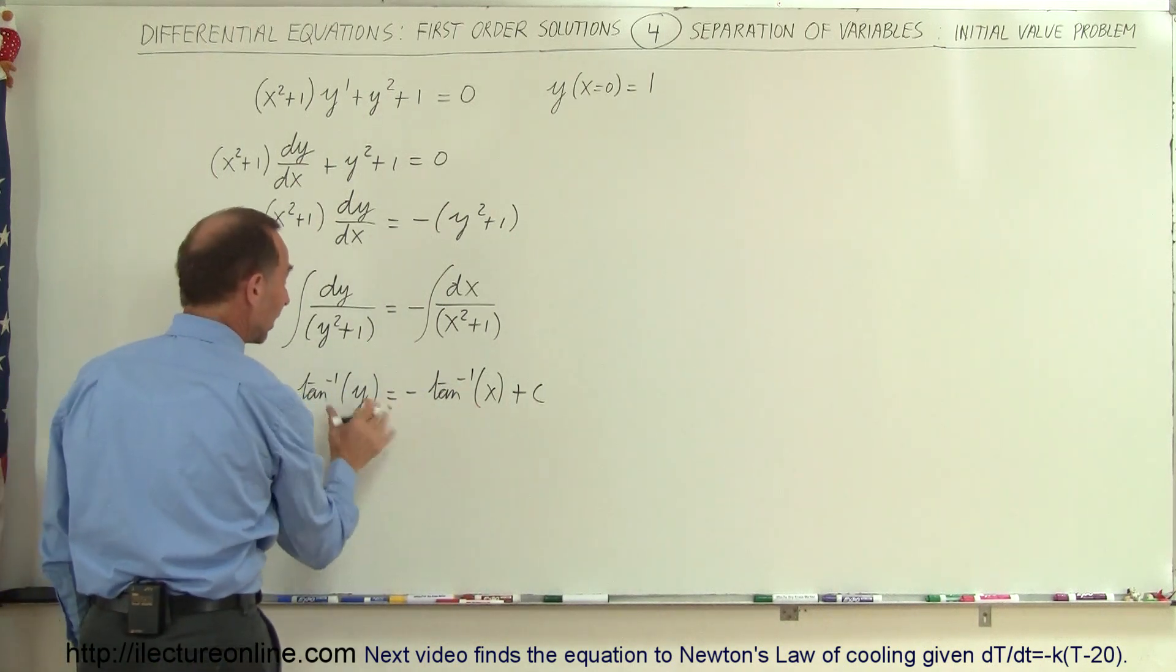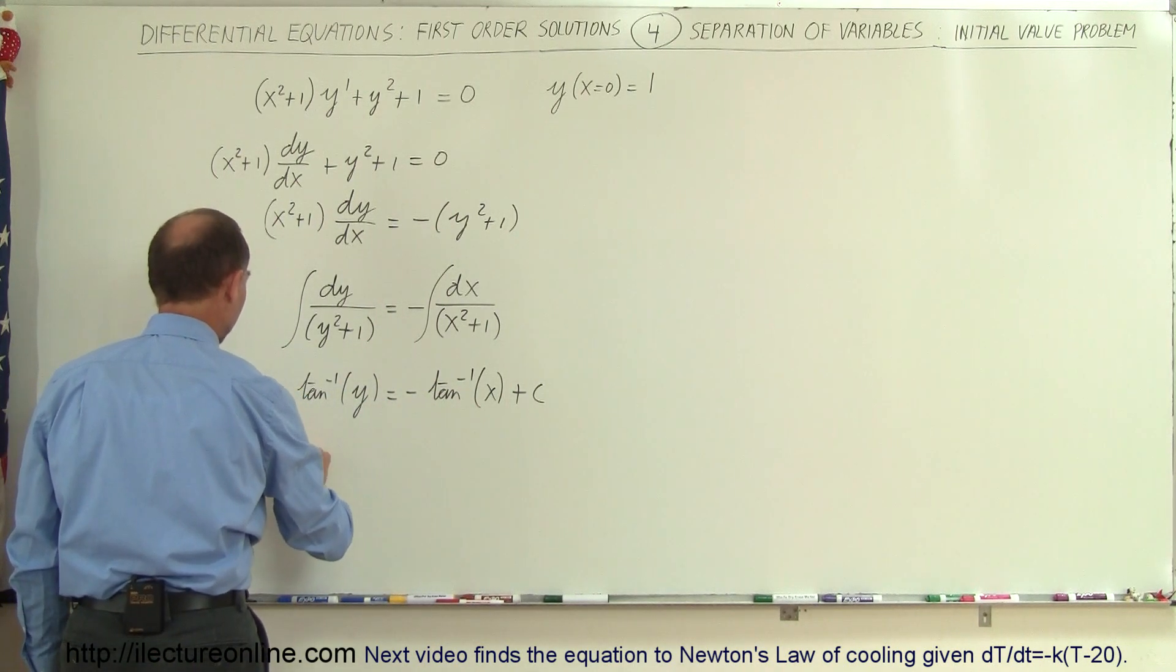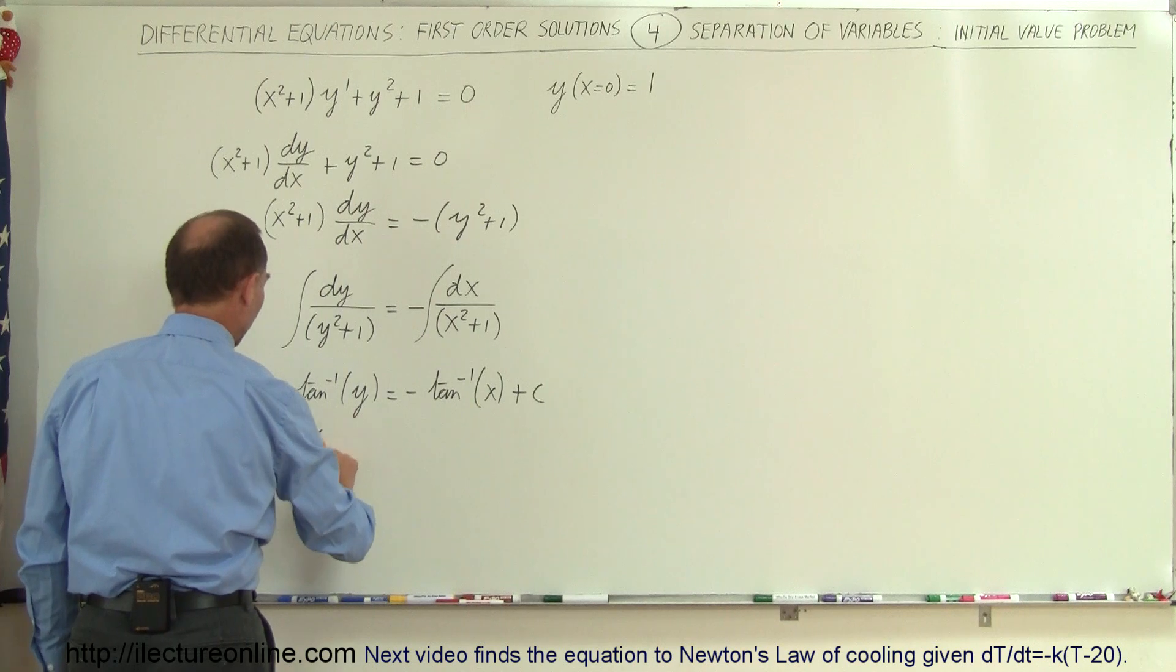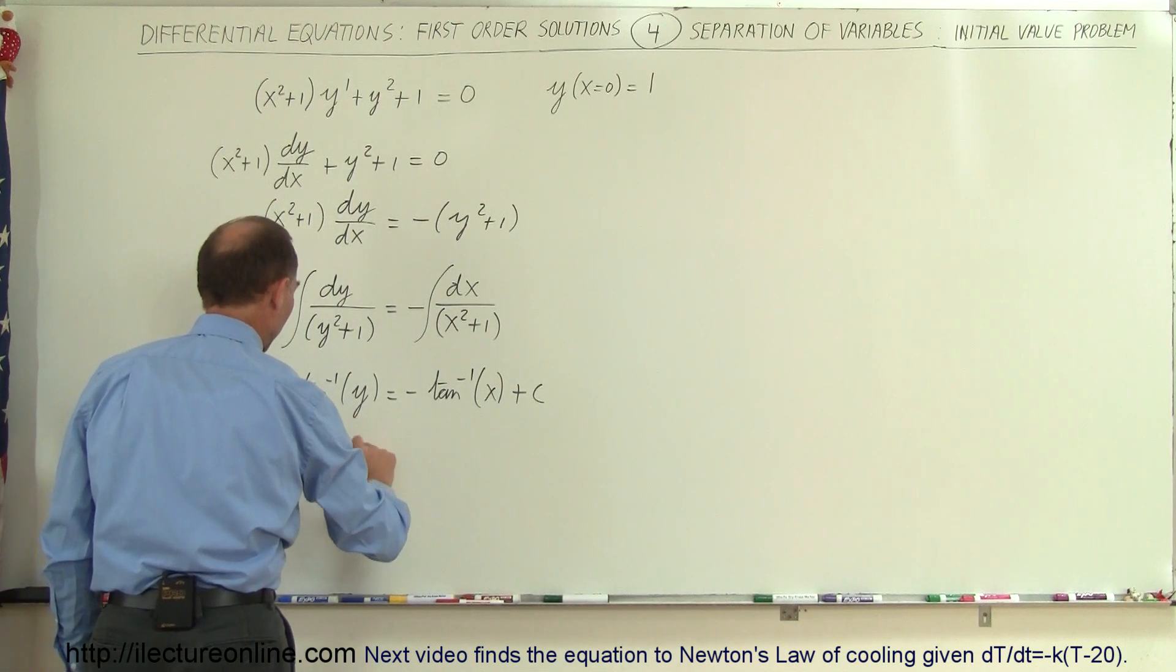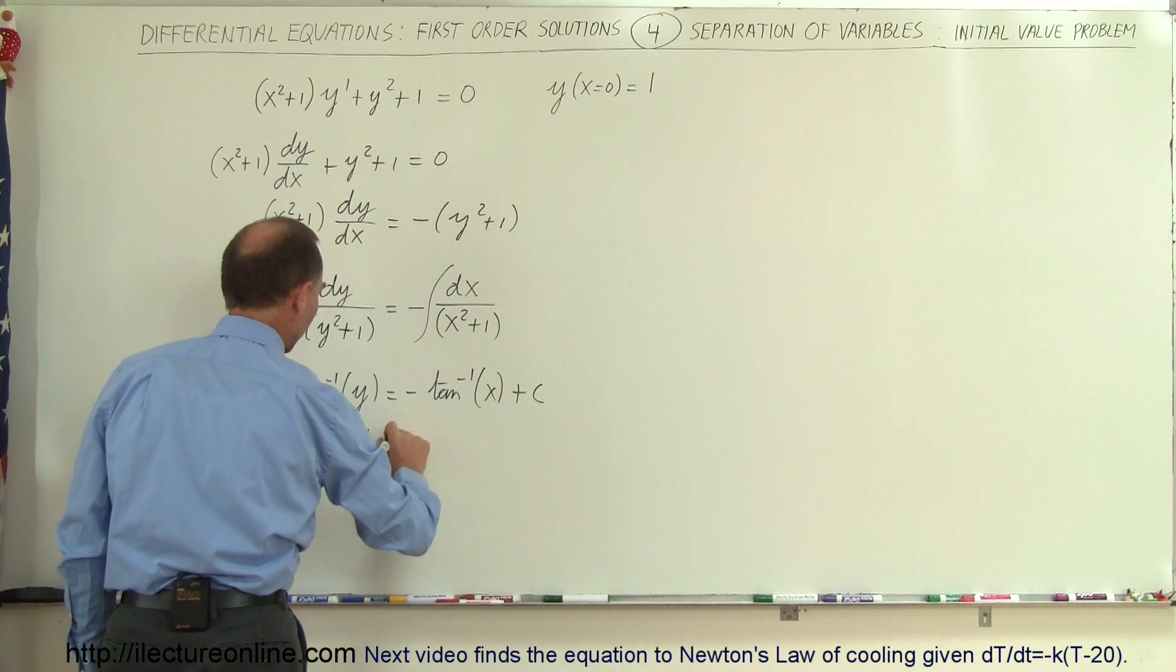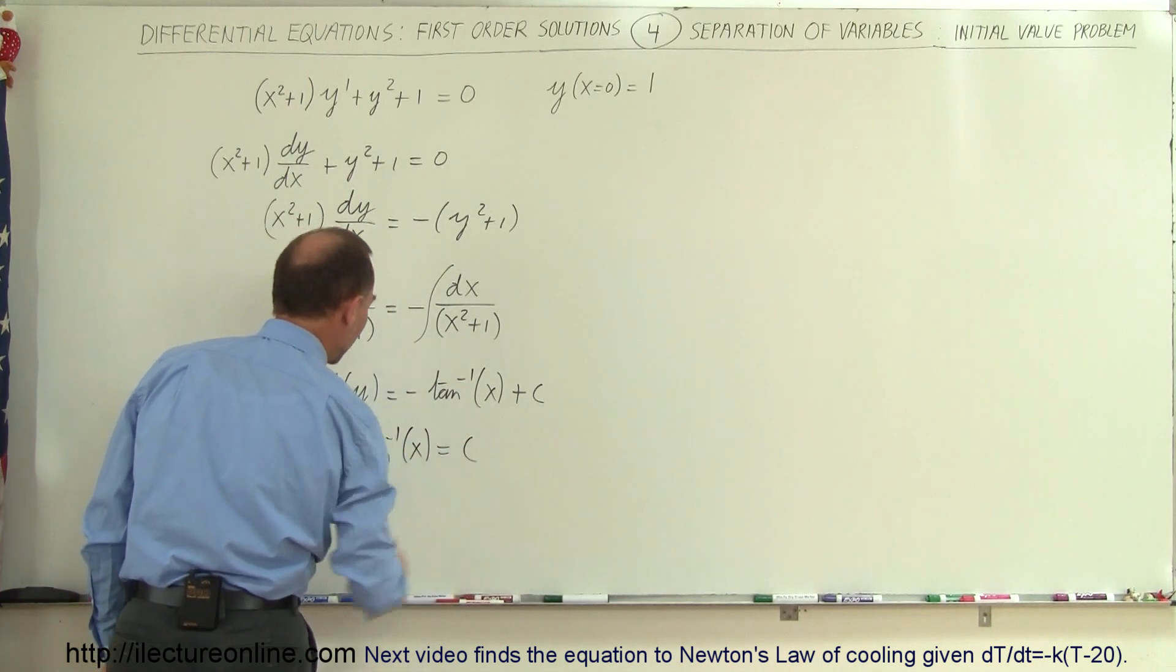Now we're going to move this over to the left side equation, so we can write arctan(y) + arctan(x) = c.